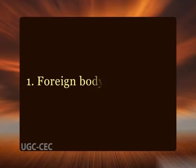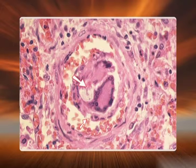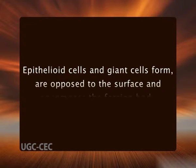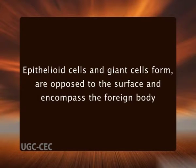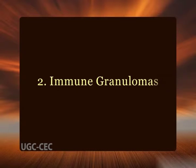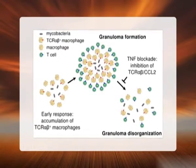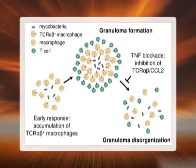There are two types of granulomas. First, foreign body granulomas: they are incited by relatively inert foreign bodies. Typically, foreign body granulomas form when materials such as talc or other fibers are large enough to preclude phagocytosis by a single macrophage and do not incite any specific inflammatory or immune response. Epithelioid cells and giant cells form apposed to the surface and encompass the foreign body.